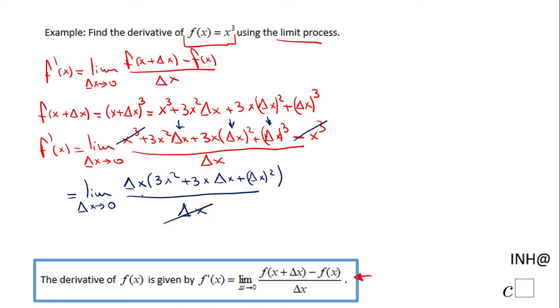These two Δx cancel out, so this limit becomes the limit when Δx approaches zero of 3x² + 3xΔx + Δx².